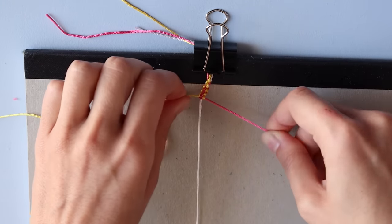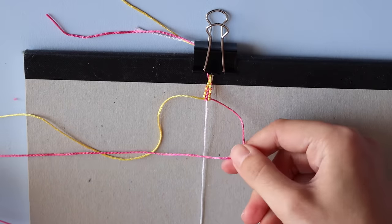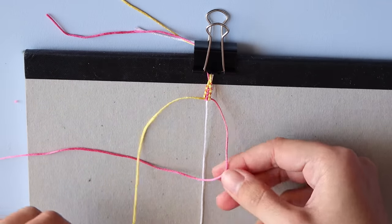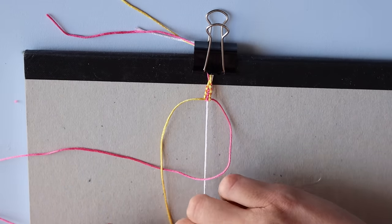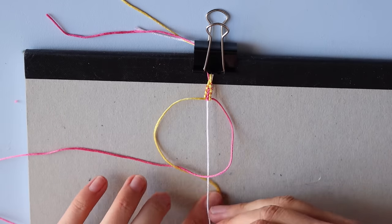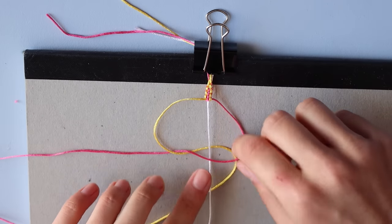And then do the same for the other side. Cross the right cord over the one in the center, bring the left one over it and under the other two, into the loop.